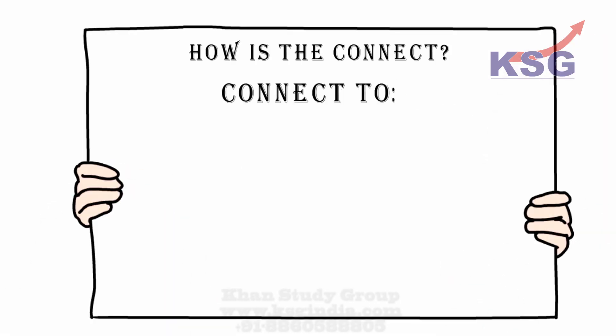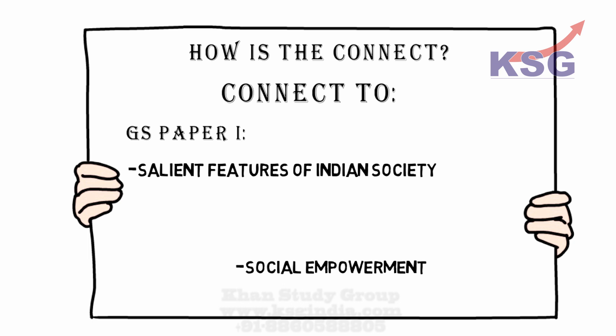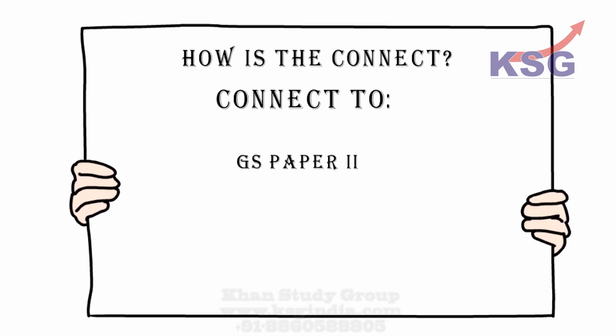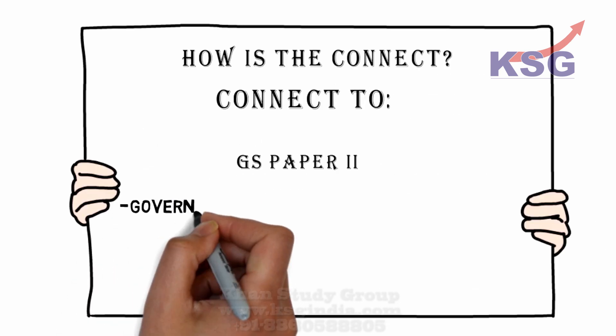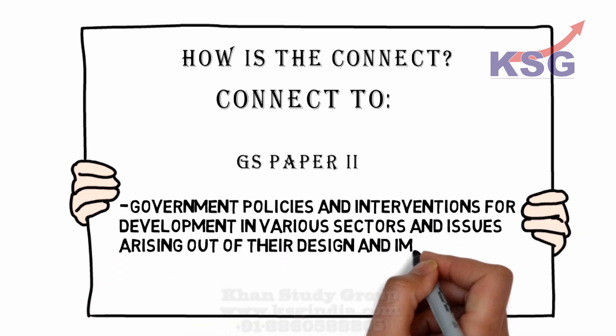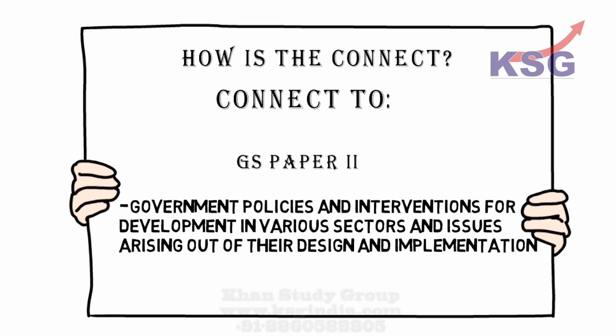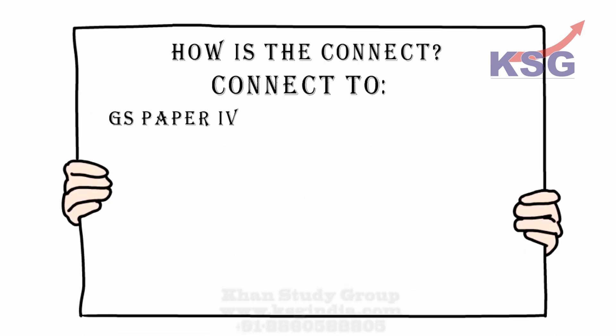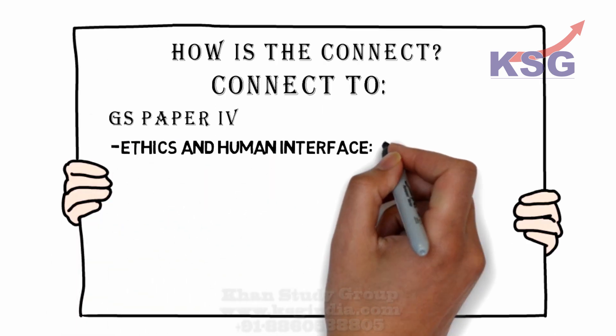For instance, GS Paper 1: Social empowerment, salient features of Indian society. GS Paper 2: Government policies and interventions for development in various sectors and issues arising out of their design and implementation. GS Paper 4: Ethics and human interface, ethics in private and public relationships.